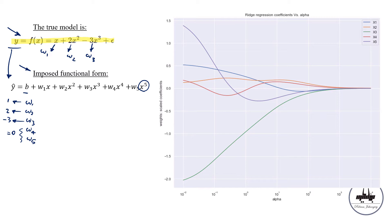Here's a plot of ridge regression coefficients — the Ws — versus alpha. In Python, this alpha is our lambda. We call the shrinkage penalty parameter alpha in Python, but it is the same as lambda. If you're curious to look at the codes or the full lectures, please make sure you watch my other course on YouTube — Machine Learning Applications in Finance — where I share all the slides and Jupyter notebooks on my GitHub account.